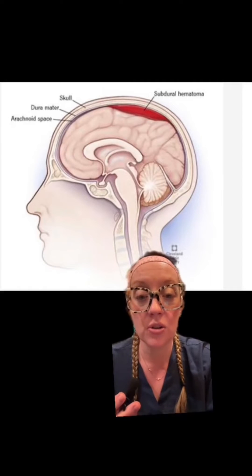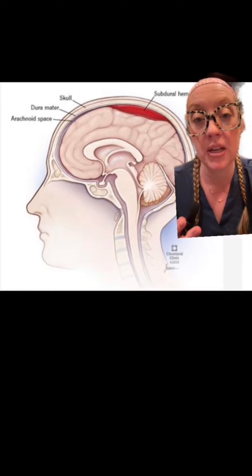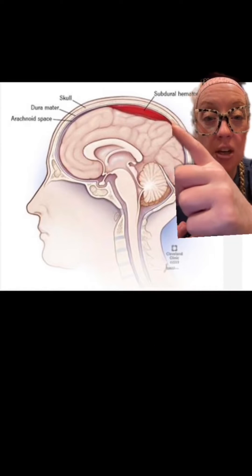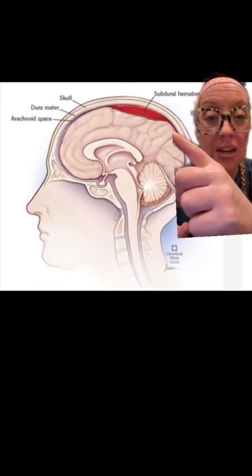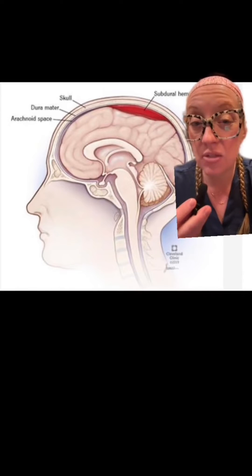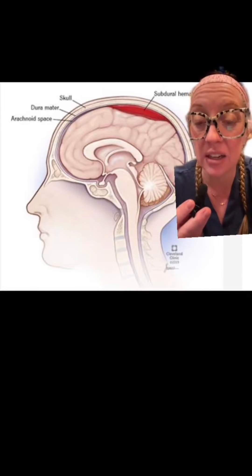Here's a cartoon depiction of what a subdural hematoma is. From your brain to the dura, these veins can get torn with trauma and cause bleeding. That could be from a fall, a car accident, or they can even be spontaneous.